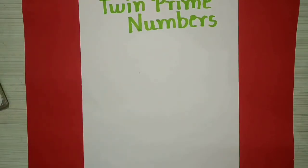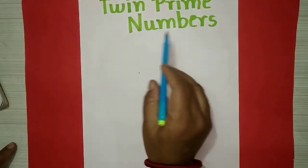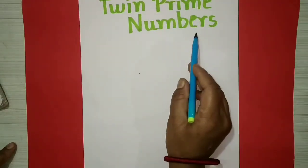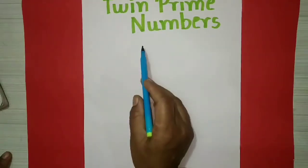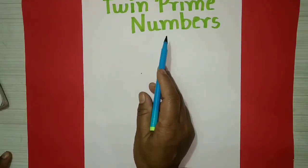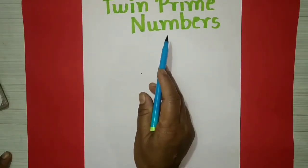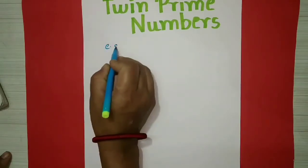Now, second, we will see twin prime numbers. If the difference between two co-prime numbers is 2, the numbers are said to be twin prime numbers. For example,